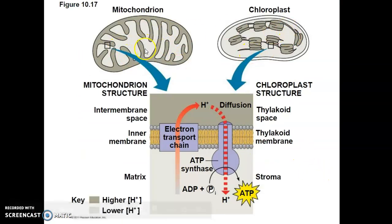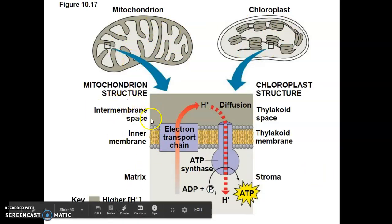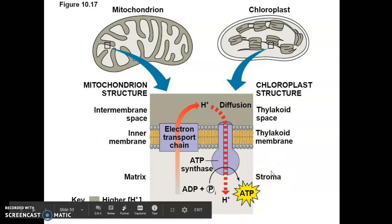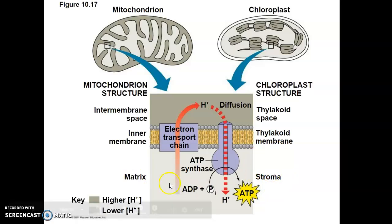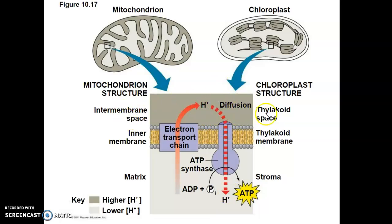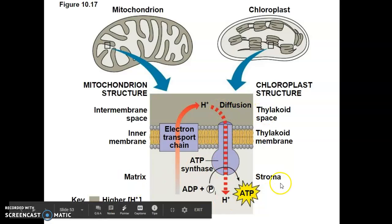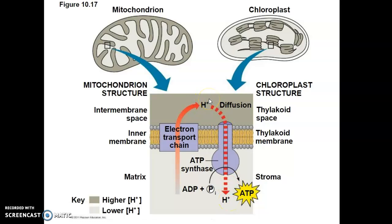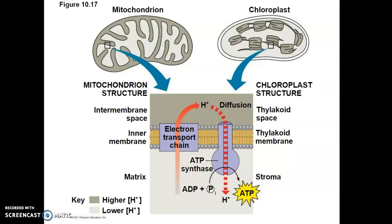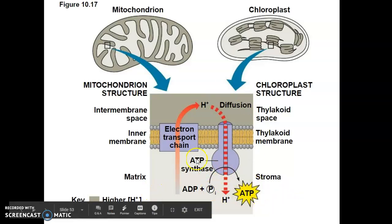Here are the two organelles side by side. The intermembrane space in the mitochondrion is called the thylakoid space in the chloroplast. The inner mitochondrial membrane corresponds to the thylakoid membrane, and the matrix corresponds to the stroma. The process of chemiosmosis is relatively the same — hydrogen protons diffuse down their concentration gradient through ATP synthase, causing it to change its conformational shape and spin its rotor, generating ATP. That's what we call chemiosmosis.